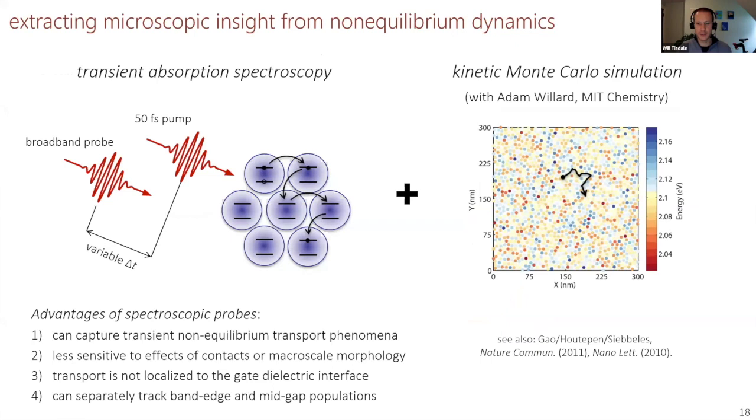Nonetheless, the KMC modeling was so useful to us that we began actually fitting all of our experimental data to kinetic Monte Carlo models to try and extract further microscopic insight. This is a series of experiments we did. This is not time-resolved microscopy. This is ultra-fast transient absorption spectroscopy, just modeling the spectral dynamics using KMC simulations to try and extract microscopic constants.